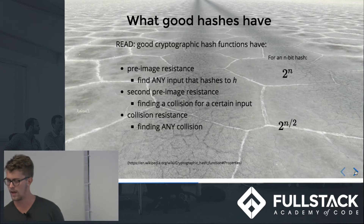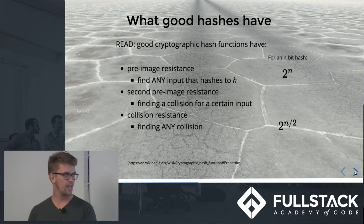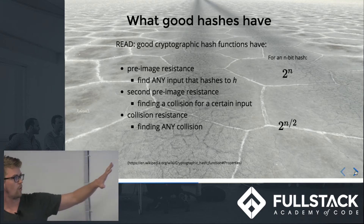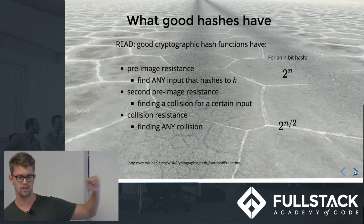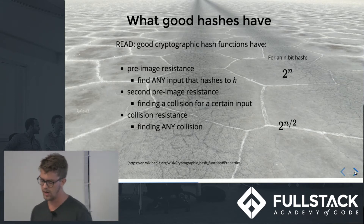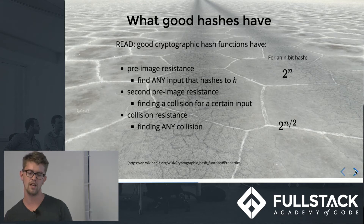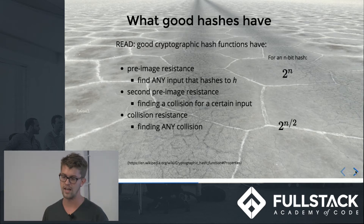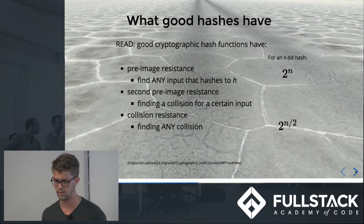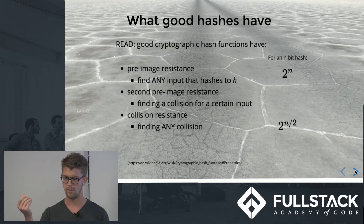And it should have collision resistance — it should be really computationally difficult to make any two inputs hash to the same value. This matters because imagine I send you a PDF and you trust it based on its hash. If I secretly had another PDF that hashed to the exact same thing, I could slip you that other PDF instead and say anything I wanted. I can basically change trusted information just because I have a duplicate that hashes to the same thing.